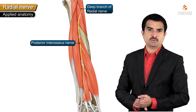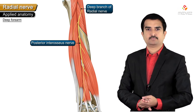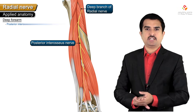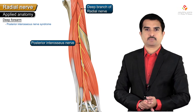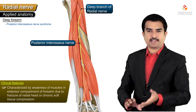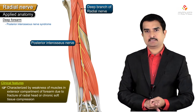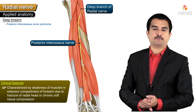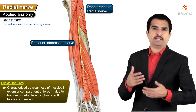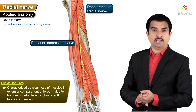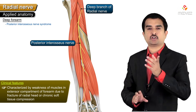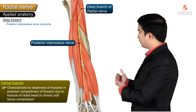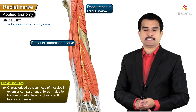The posterior interosseous nerve may also be injured in the deeper forearm, which is called posterior interosseous nerve syndrome. This syndrome is characterized by weakness of muscles in the extensor compartment of the forearm, most commonly due to fractures of the radial head or chronic soft tissue compression.